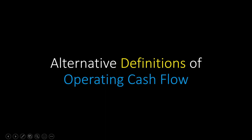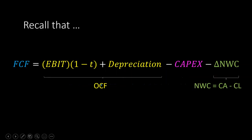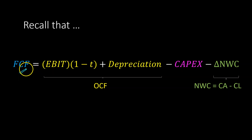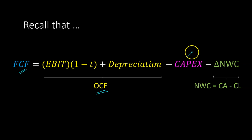In this video, I'm going to talk to you about the different ways in which you can calculate operating cash flow. Recall that in capital budgeting decisions, one of the things you have to do is calculate the incremental financial cash flows that a project is going to generate. We first determine what the project's operating cash flows are going to be, then net out any long-term investments, denoted CapEx, and any short-term investments, measured using changes in net working capital.